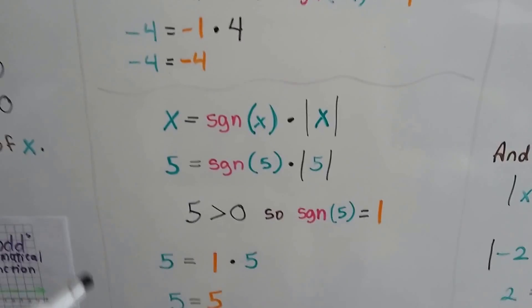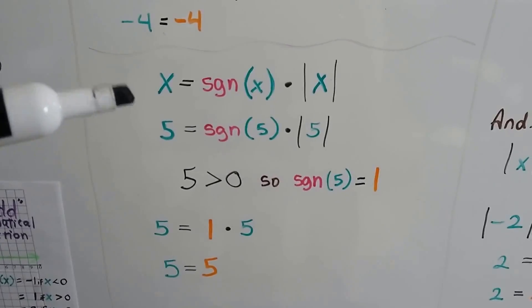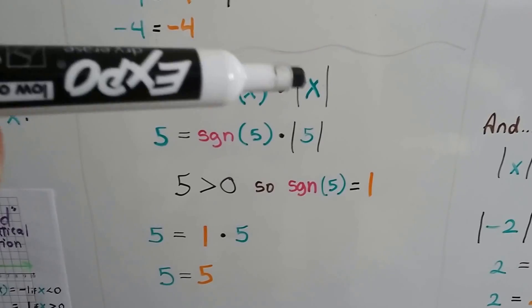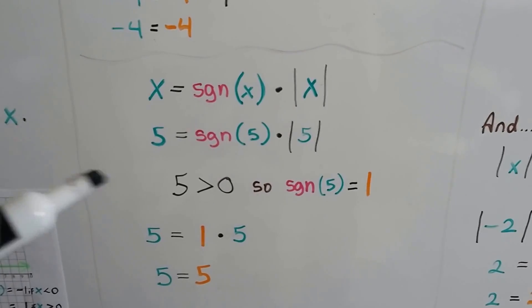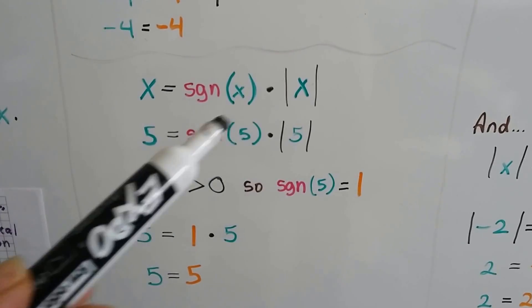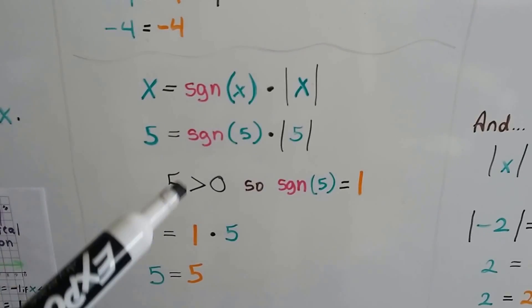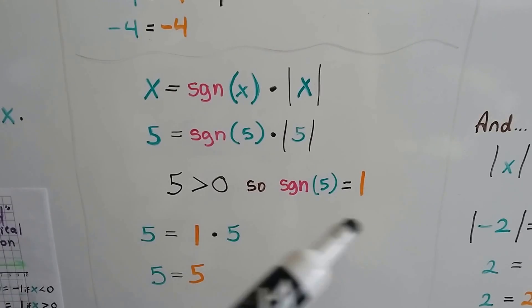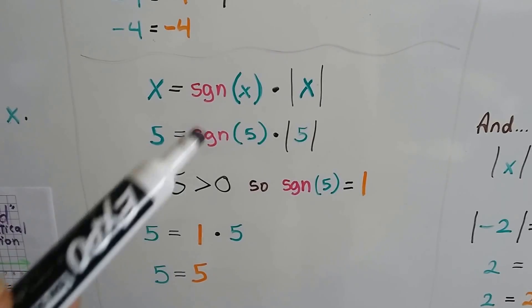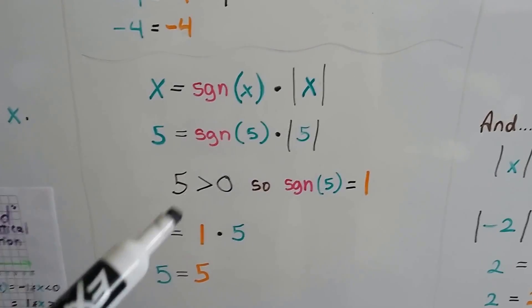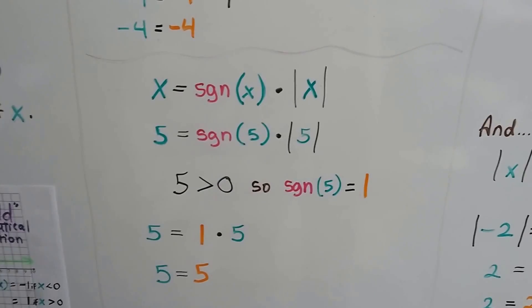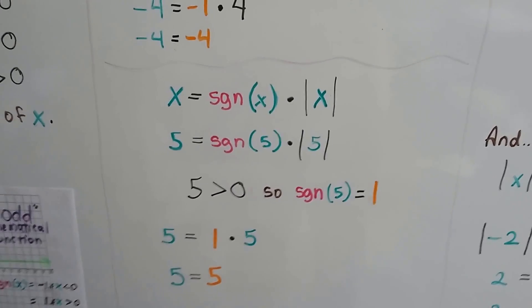Let's try it with a positive number. We have x equals the sign function of x times the absolute value of x. If we use positive five, the sign function of five is greater than zero, so we get a positive one. When we multiply positive one times the absolute value of five, which is five, we get five. See how that happened?